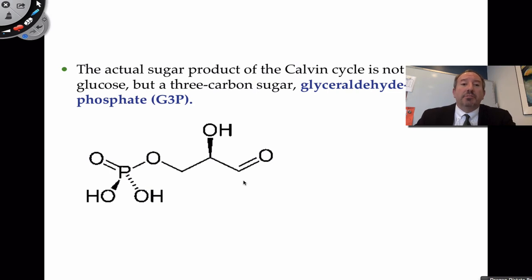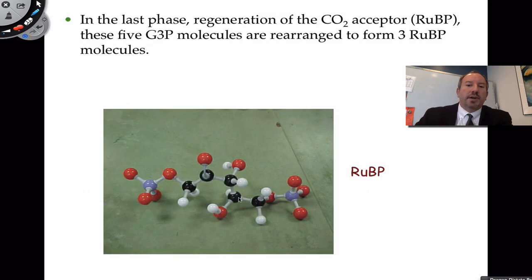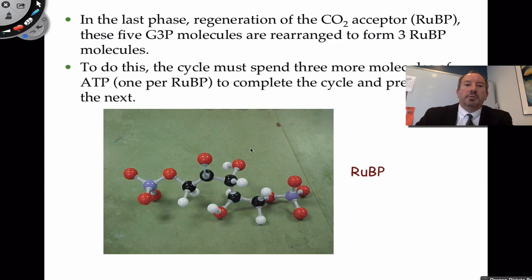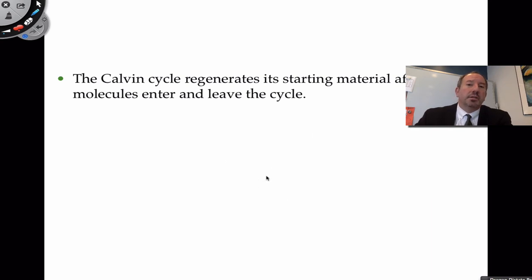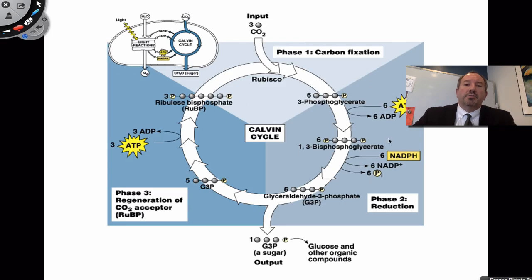Glucose is technically made when you take two glyceraldehyde phosphates and attach them together — three plus three equals six carbons. That is why the Calvin cycle needs to go around twice. The five remaining GAP molecules must be rearranged with the help of ATP to regenerate the starting RuBP, and the very last part of the cycle regenerates the starting material, although three of the carbons left.